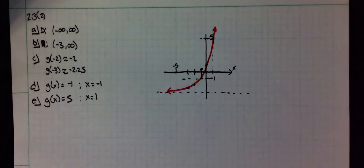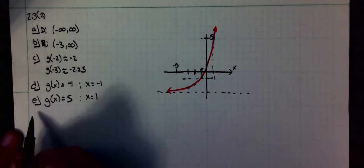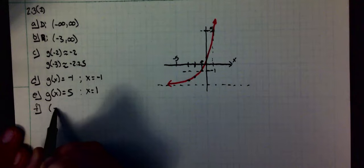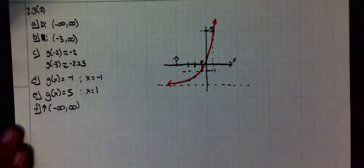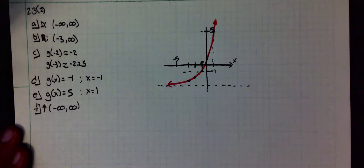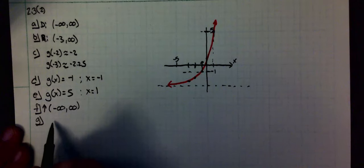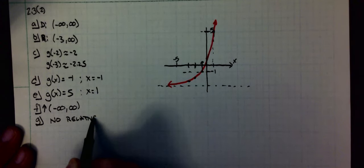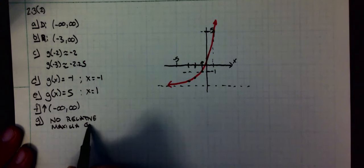Part F: give the intervals on when the graph is increasing. Well, this graph is always increasing, so negative infinity to infinity. Part G: at what x values does the function have a relative maxima or minima? No relative maxima or minima.